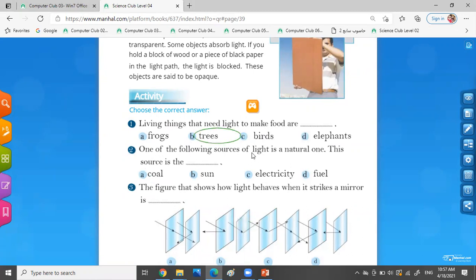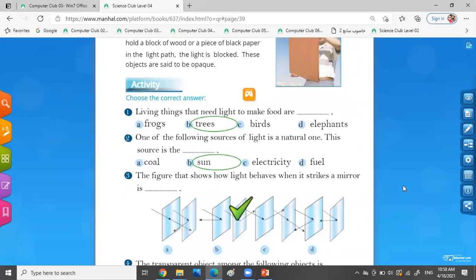One of the following sources of light is a natural one. This source is the natural one: the sun. Bravo. Okay, look at this activity please.